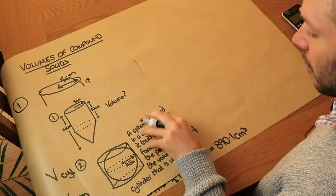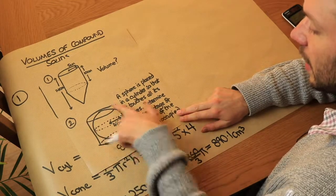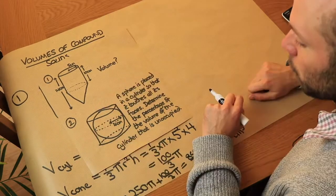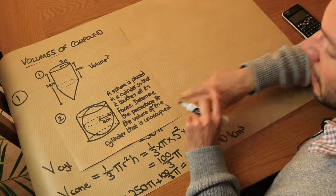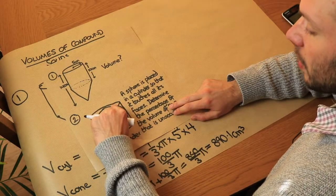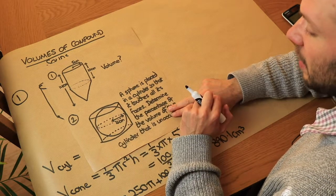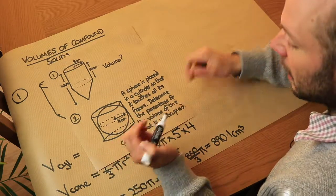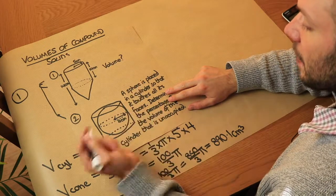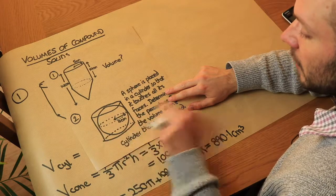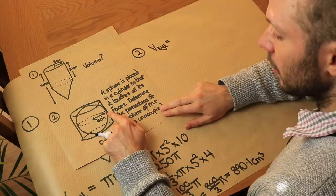For the second example, a sphere is placed in a cylinder so that it touches all its faces. We need to determine the percentage of the volume of the cylinder that is unoccupied — that is, the volume outside the sphere but inside the cylinder. To do that, we find the volume of the cylinder and subtract the volume of the sphere.